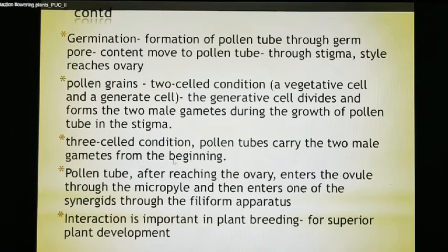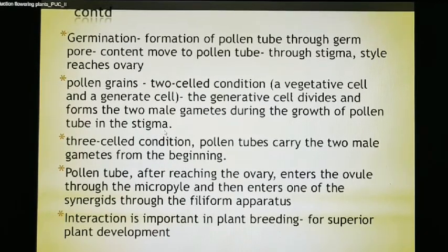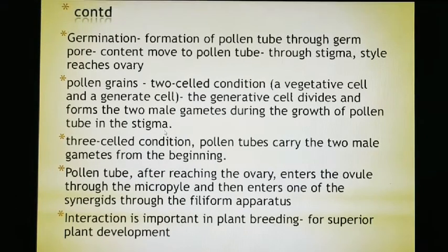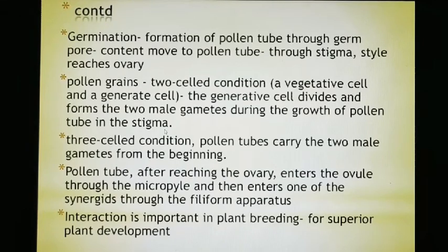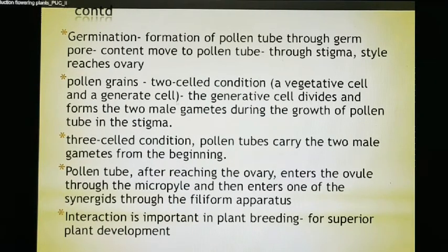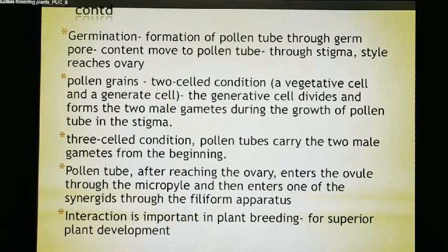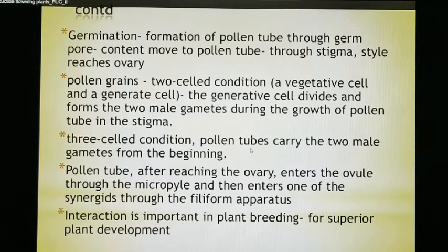During the growth of the pollen tube in the stigma, the generative cell and vegetative cells divide to form two male gametes. These male gametes will fuse with the egg cell and the two polar nuclei. So the pollen tube already carries two male gametes in a three-celled condition from the beginning. Two male gametes are present inside the pollen tube.